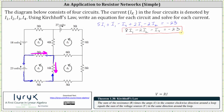Now let's move along to circuit two. I sub two is flowing in the counterclockwise direction. But at the resistor of two ohms, I sub one is flowing in the opposite direction. And at the resistor of four ohms, I sub three is flowing in the opposite direction. To begin circuit two, we have two times I sub two, but current I sub one is flowing in the opposite direction, giving us negative two times I sub one.